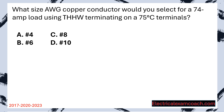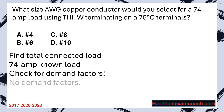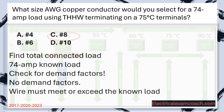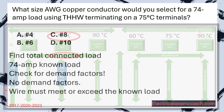What size AWG copper conductor would you select for a 74 amp load using THHW terminating on 75 degrees C terminals? Step one: find the total connected load — it's 74 amps. There's no specific piece of equipment and no continuous load, so there are no demand factors. The wire must meet or exceed the known load. We head to our primary ampacity table, confirm copper and 75 degrees C terminals, then find a wire that will cover 74 amps. Using a straight edge, we come over and find number 4 AWG. The answer is A.